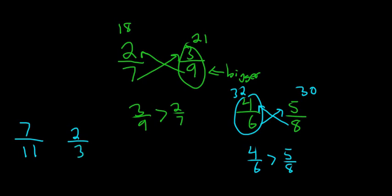So you multiply. 11 times 2 is 22. 3 times 7 is 21. Ooh, 22 is barely bigger than 21, right? But it is bigger. So 2 thirds is bigger than 7 over 11. Boom.